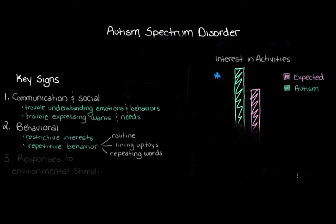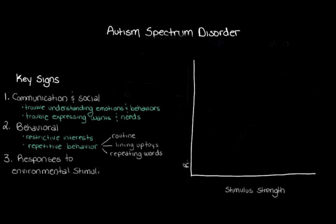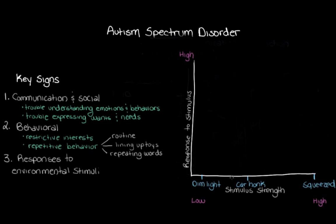Our last category is responses to environmental stimuli. Let's make another graph with stimulus strength on the x-axis and the child's response on the y-axis. A low-strength stimulus might be a dim light that most people wouldn't notice. A medium-strength stimulus would be a noise like a car honking. A high-strength stimulus would be being squeezed really tightly. We'd expect a child to respond least to the dim light, a little more to the car honk, and the most to being squeezed tightly — so the higher the stimulus strength, the greater the response.